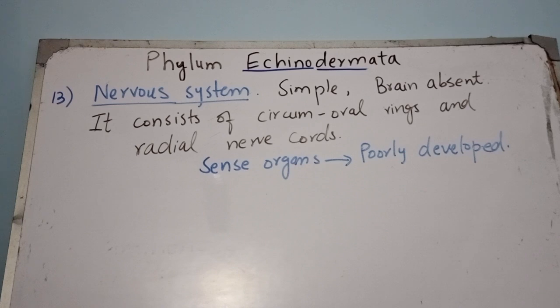The nervous system of echinoderms is simple; the brain is absent. The nervous system consists of a circumoral ring and radial nerve cords. The sense organs are also poorly developed.